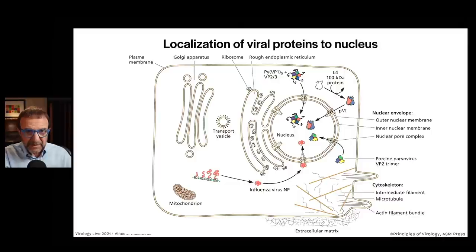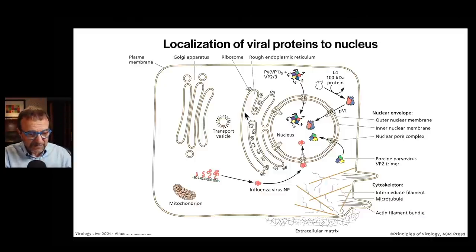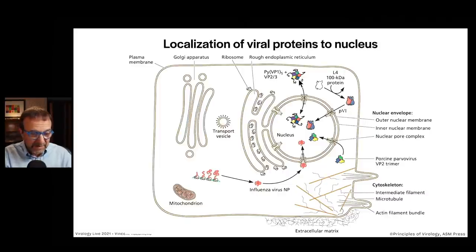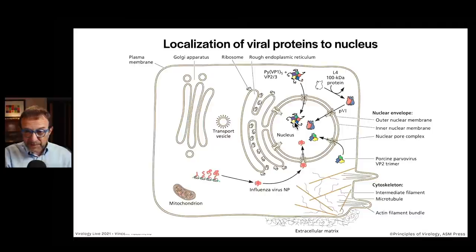Let's look at some examples of localization of viral proteins to the nucleus. Here is a cell with nucleus and endoplasmic reticulum and the Golgi apparatus. For polyomavirus, the structural virion proteins forming a pentamer are made in the cytoplasm, have nuclear localization signals, and are imported into the nucleus — because that's where the DNA is replicating and where the virus particles are assembled.